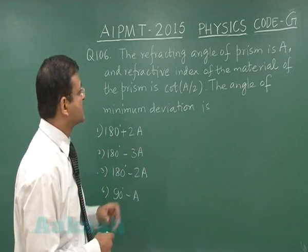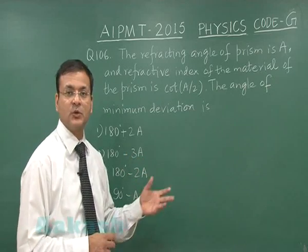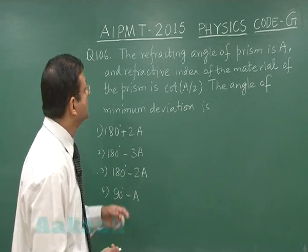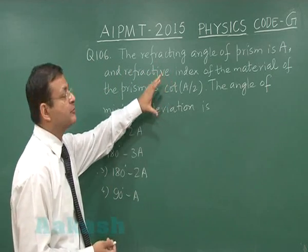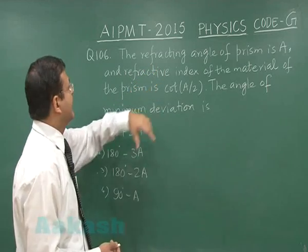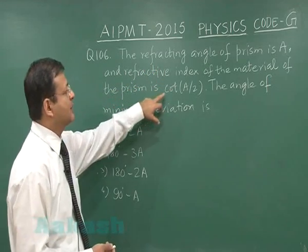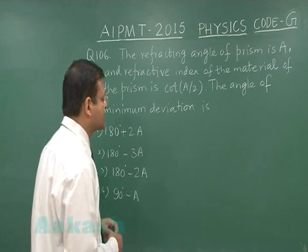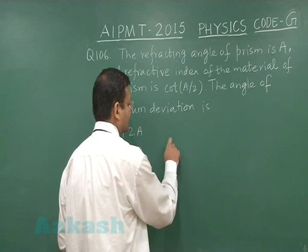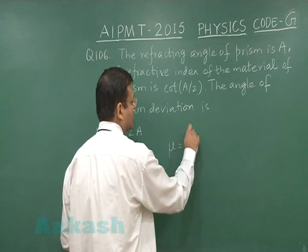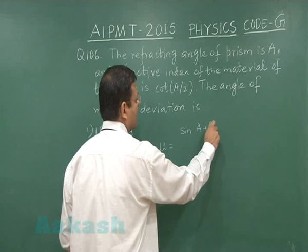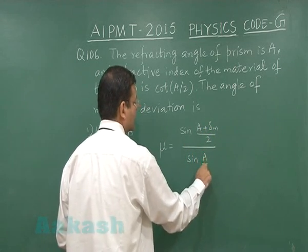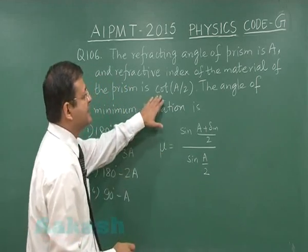Question 106 is based on ray optics — specifically the prism formula, and is a very standard question. The refracting angle (angle of prism) is A and the refractive index of the material is cot(A/2). We need to find the angle of minimum deviation. The prism formula states: μ = sin[(A + δm)/2] / sin(A/2).